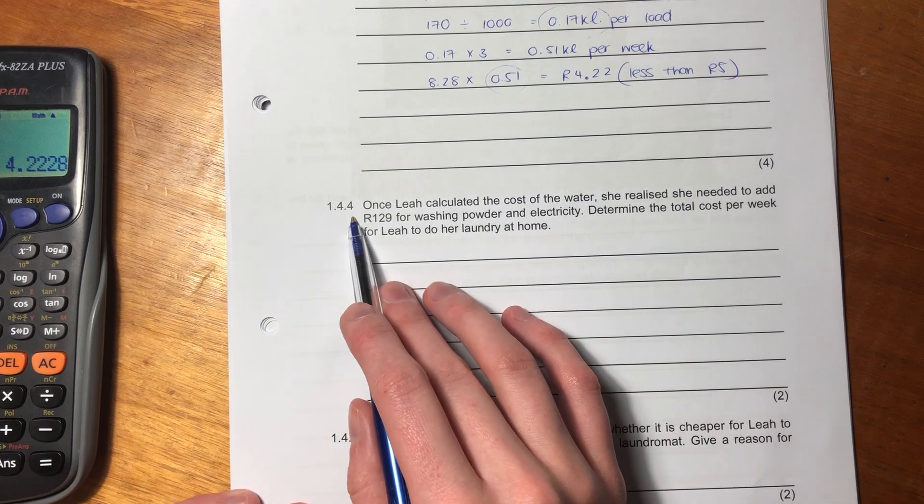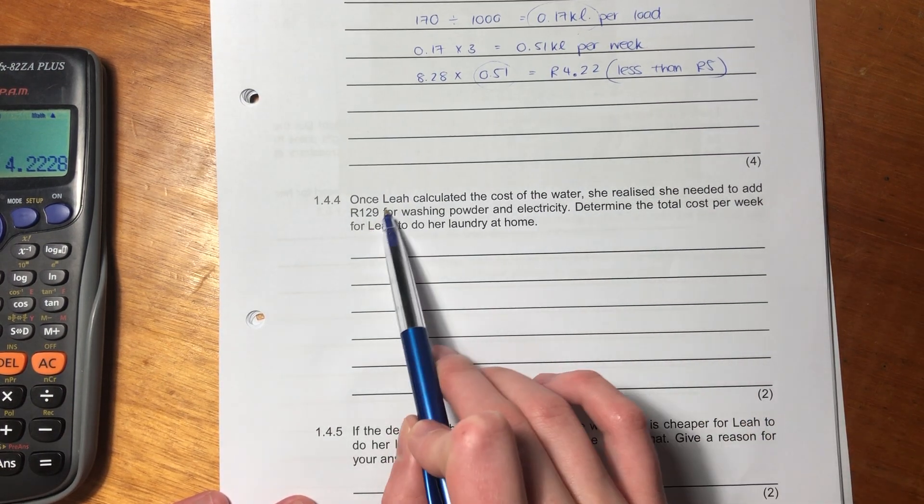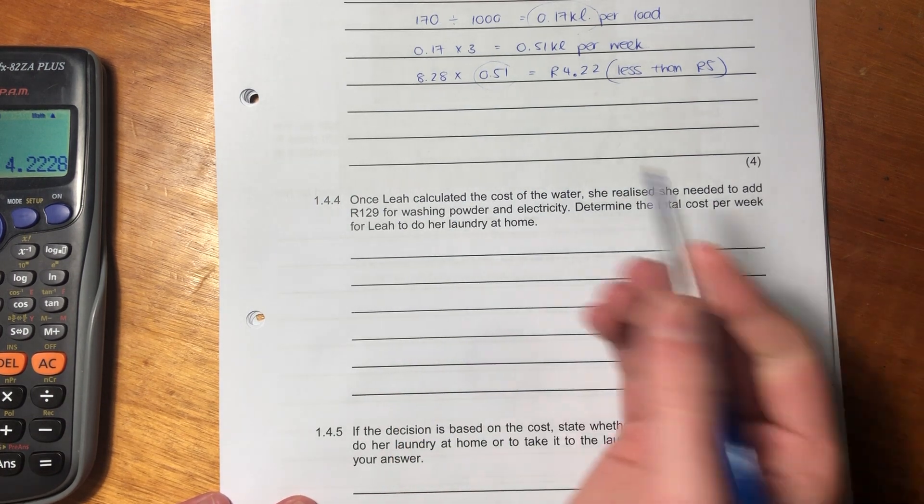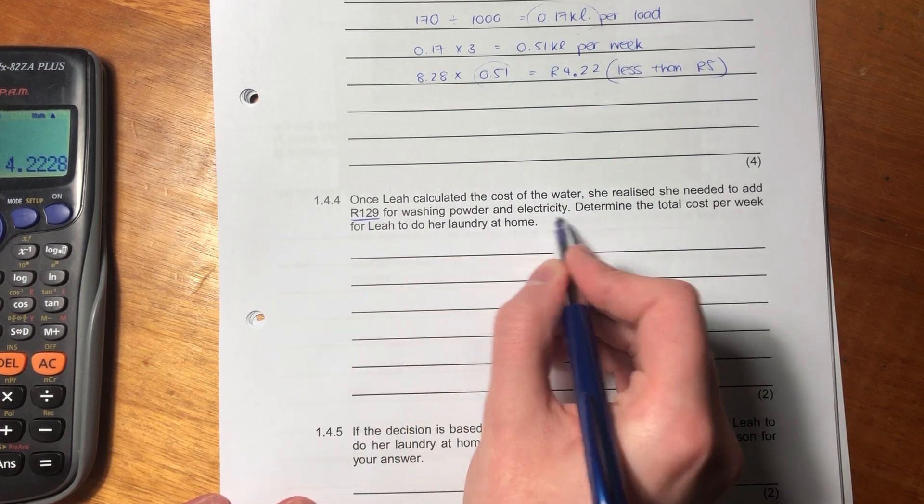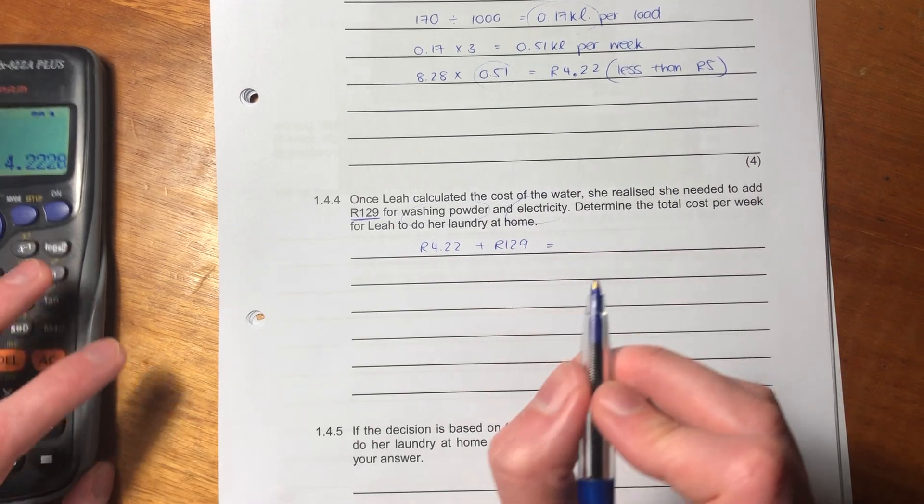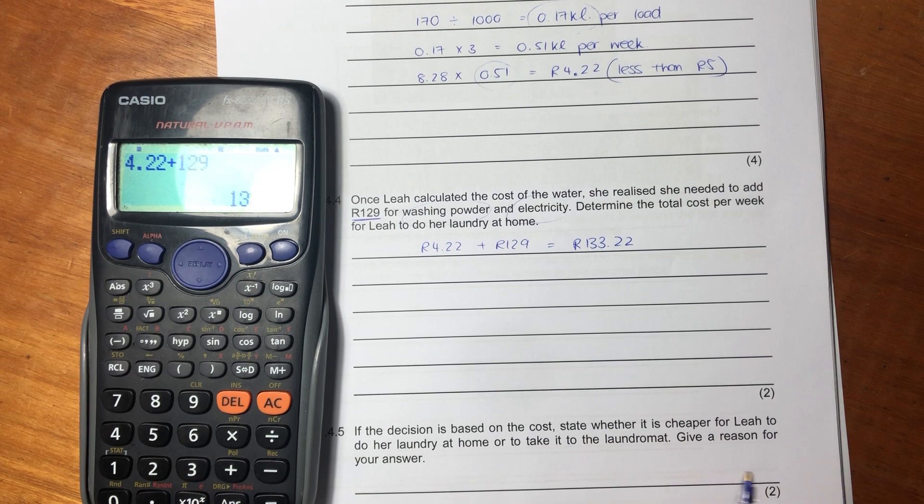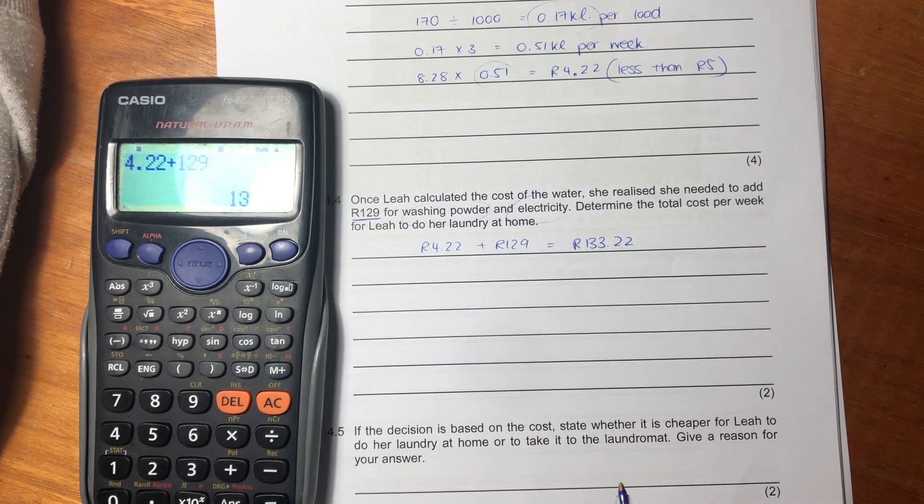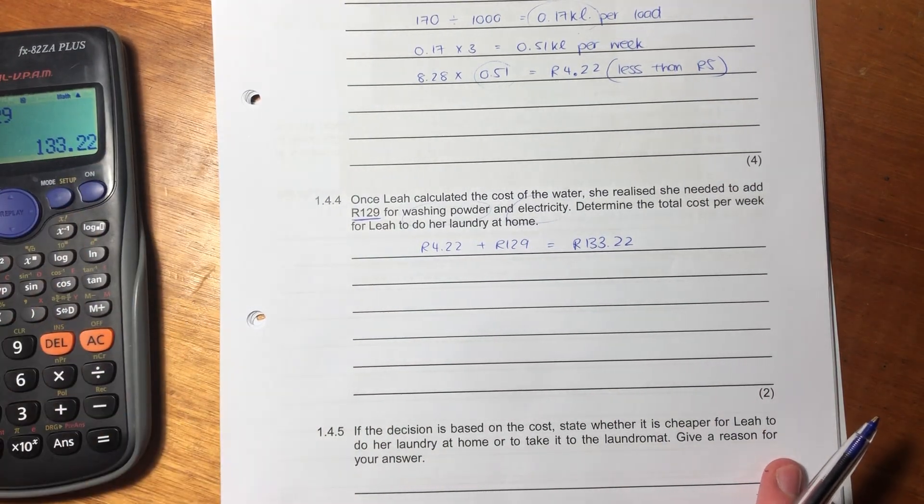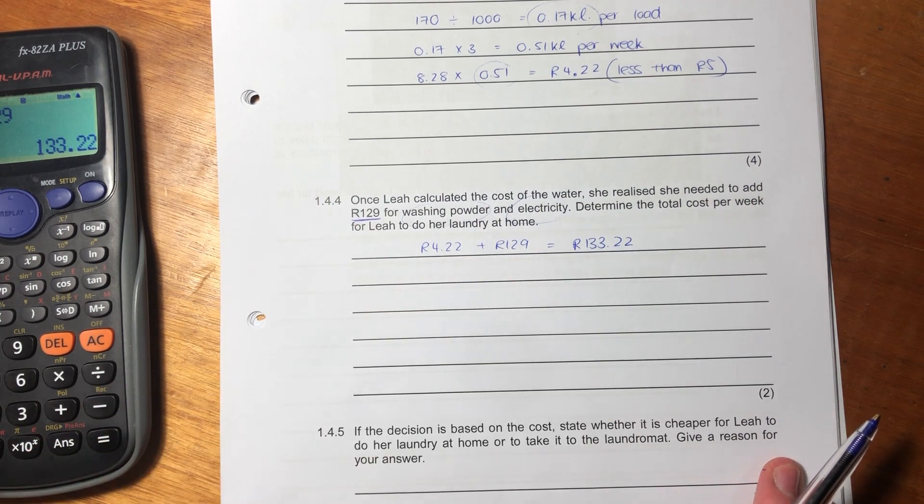Let's now move on to 1.4.4. Once Leah calculated the cost of the water, she realized she needed to add 129 rand for washing powder and electricity. Determine the total cost per week for Leah to do her laundry. This is how much she has to pay per week for water, for electricity and washing powder. We have to add that to the water. The total amount she would pay for that is 133 rand and 22 cents. That's how much she would pay if she did her washing at home, taking into consideration all costs that she would incur around cleaning her own clothes.